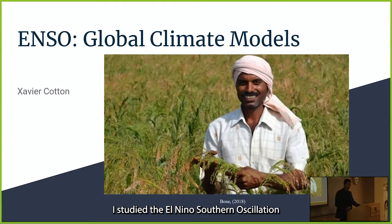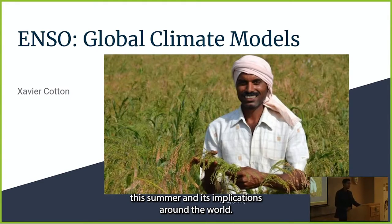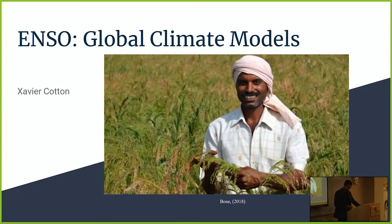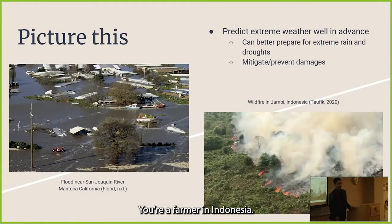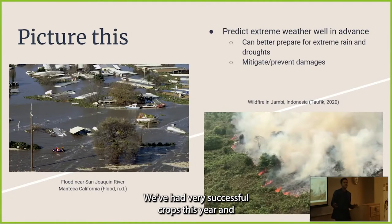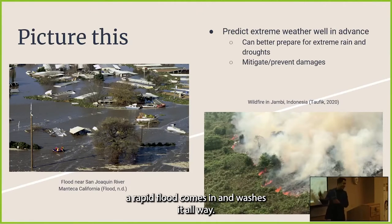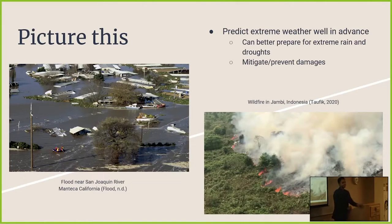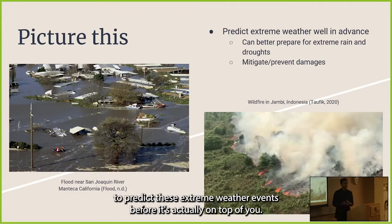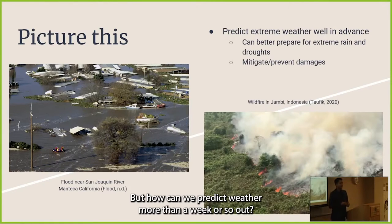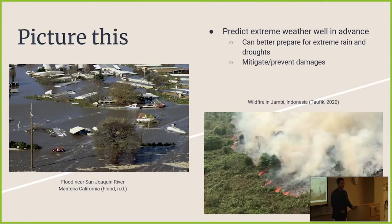I studied the El Niño Southern Oscillation this summer and its implications around the world, and I'm super excited to share what I found out. Picture this: you're a farmer in Indonesia, you've had very successful crops this year, and right before you can harvest them, a rapid flood comes in and washes it all away. That's why it's so important to predict these extreme weather events before they're actually on top of you — but how can we predict weather more than a week or so out?